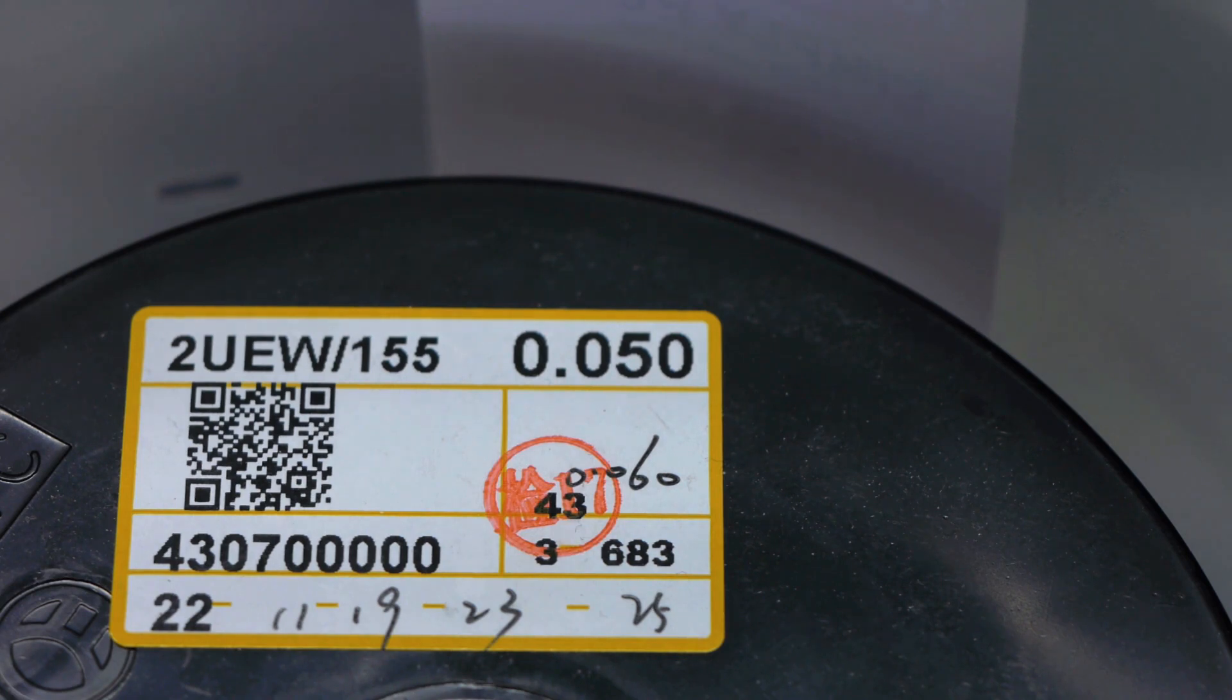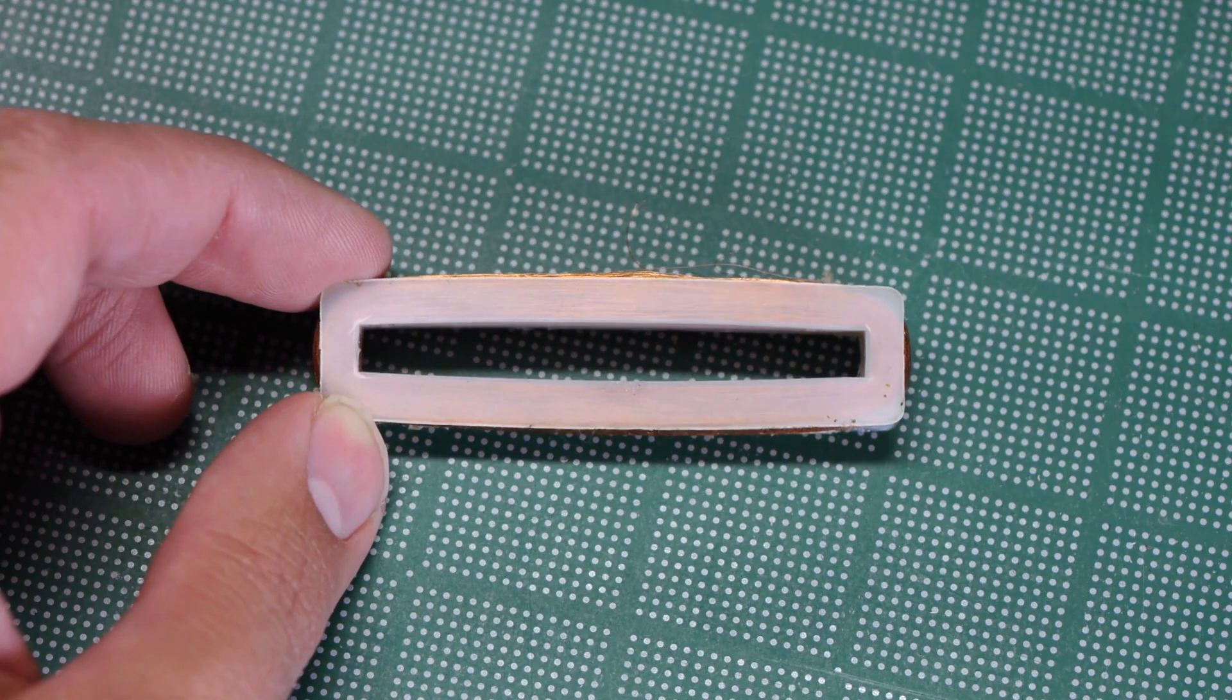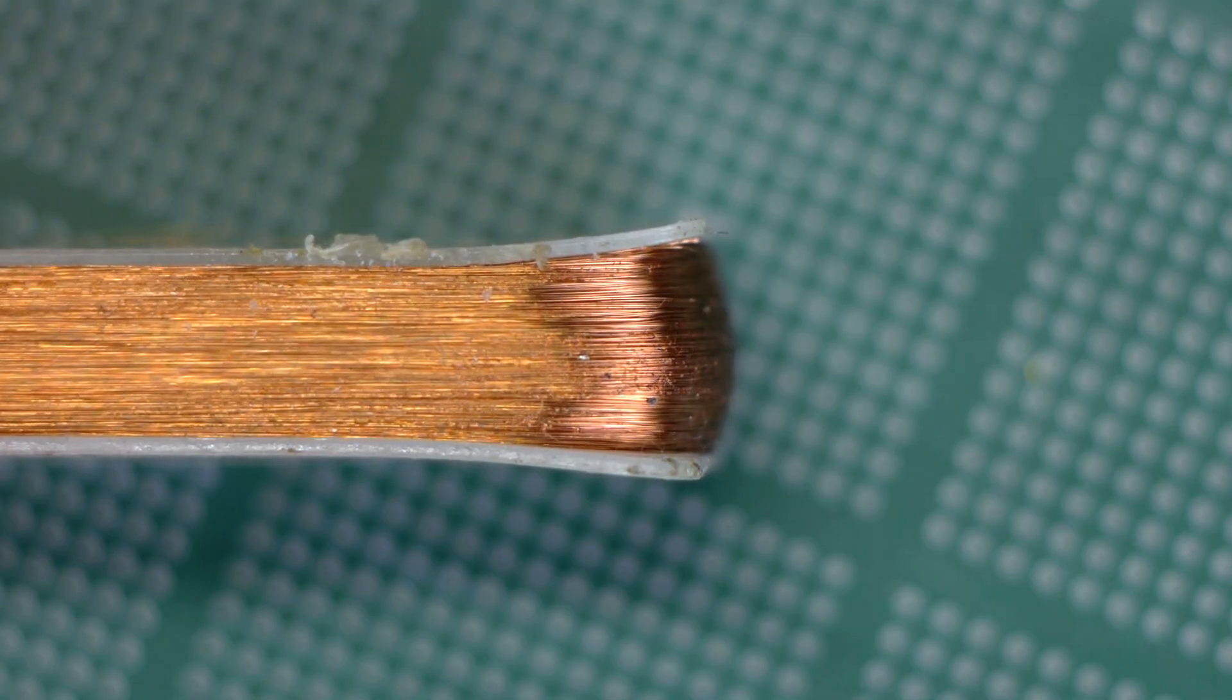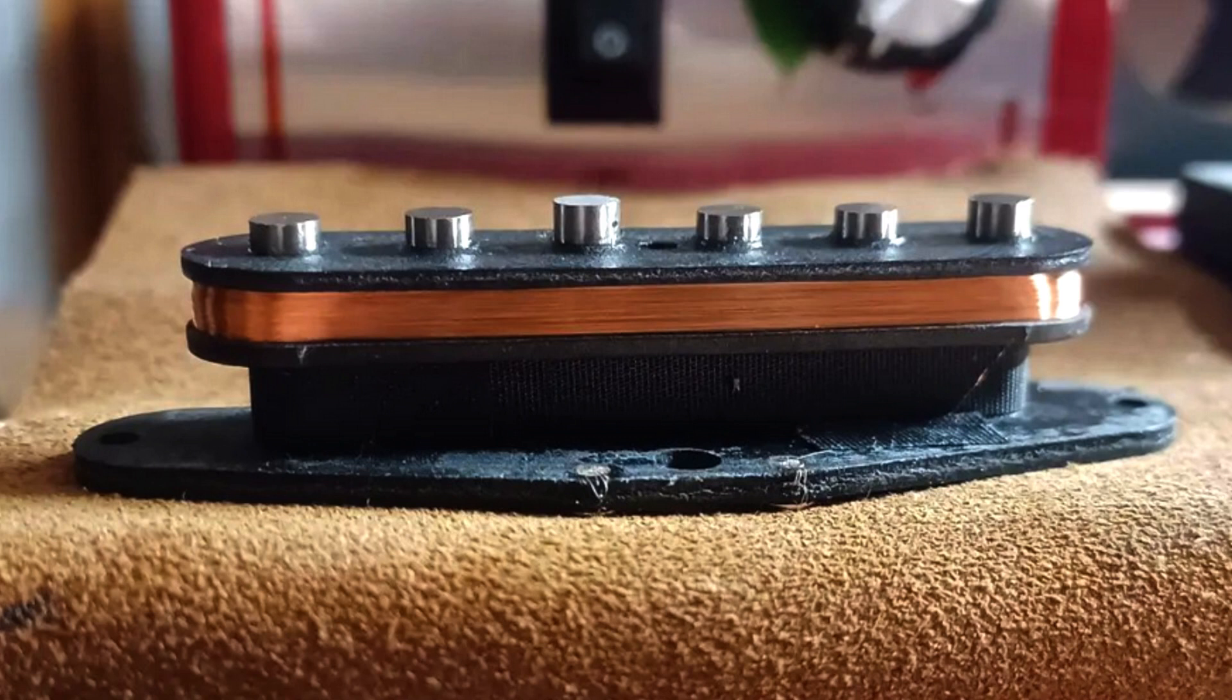That's incredibly rare, at least on pickups I've tested. The thinnest wire you're going to see on most pickups is 43 gauge wire, unless you're crazy enough to build pickups with 48 gauge wire like I do.